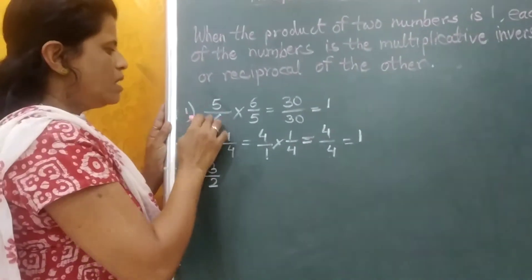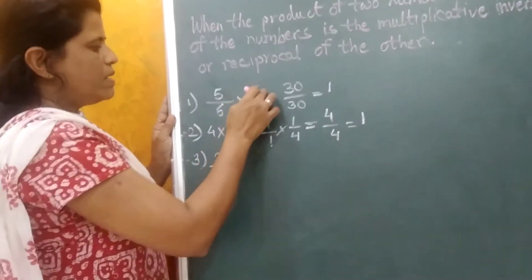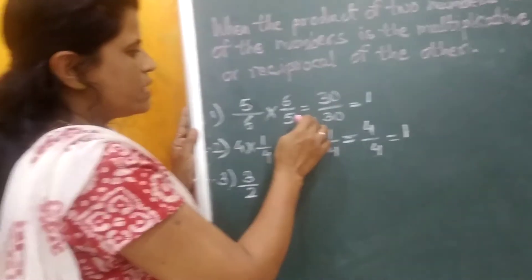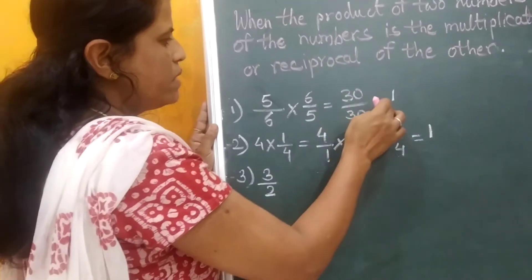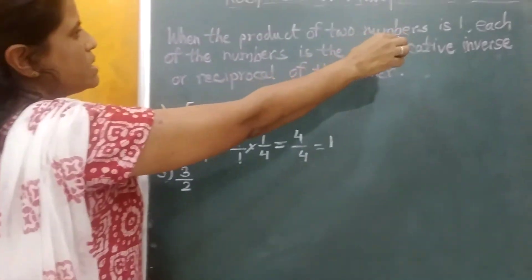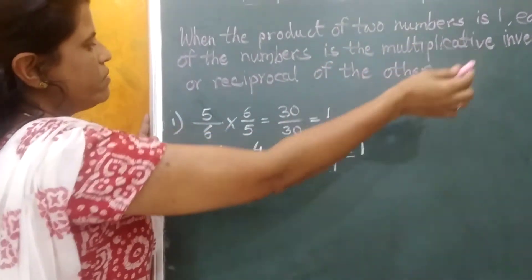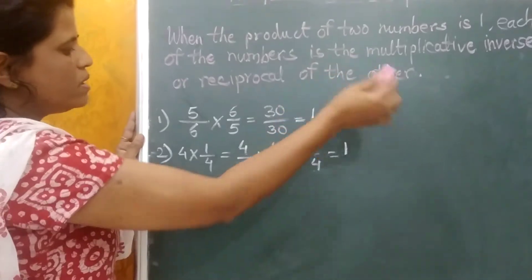Here is an example. First example, 5 upon 6. When it is multiplied by 6 upon 5, it is equal to 30 upon 30 which is equal to 1. This means when the product of two numbers is one, each of the numbers is the multiplicative inverse or reciprocal of the other.